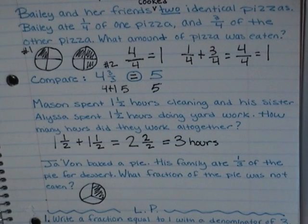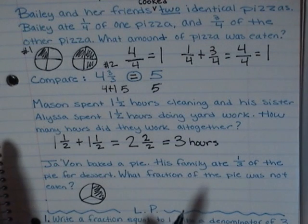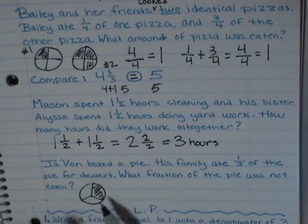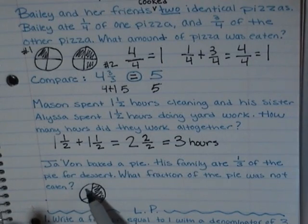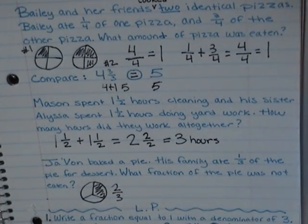Okay. His family only ate one third of it. So we want to know what fraction of the pie was not eaten. Now, you could look at your picture and say, okay, well, each piece is one third. So one third, one third, and one third. I can just add that really fast and I know that equals two thirds. And you would be right.